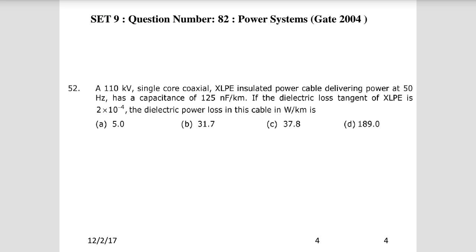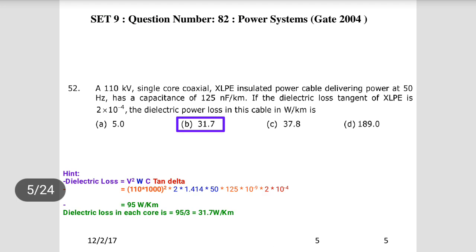Dielectric loss = V² × ω × C × tan δ. Substituting: voltage = 110 kV = 110×1000 V, ω = 2πf = 2π×50, C = 125×10⁻⁹ F/km, tan δ = 2×10⁻⁴. Calculating gives approximately 95 watts per kilometer for the total cable. Since it is a single-core coaxial cable divided per core, each core: 95/3 = 31.7 watts per kilometer.